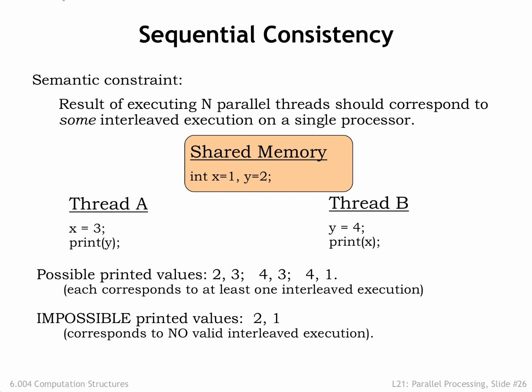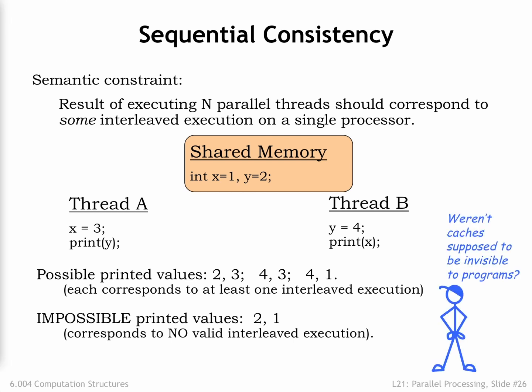So our simple multi-core system fails on two accounts. First, it doesn't correctly implement a shared memory since, as we've seen, it's possible for the two cores to disagree about the current value of a shared variable. Second, as a consequence of the first problem, the system doesn't implement sequential consistency. Clearly, we'll need to figure out a fix.